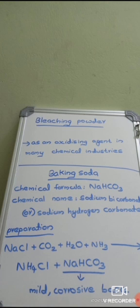Baking soda is prepared by treating sodium chloride with carbon dioxide, water, and ammonia. When sodium chloride (NaCl) is treated with CO₂, water, and ammonia, we get ammonium chloride along with NaHCO₃, which is baking soda. NaHCO₃ is a mild corrosive base.